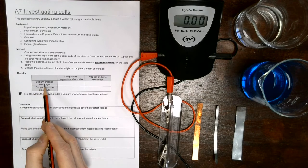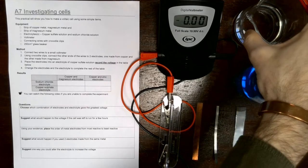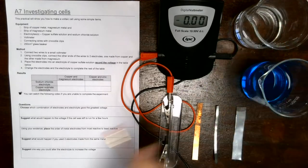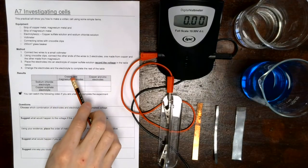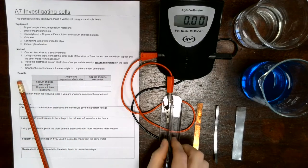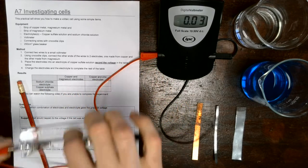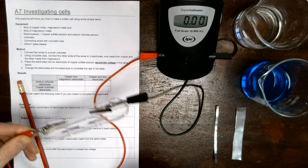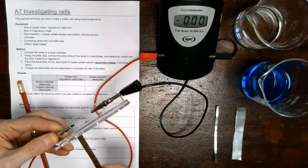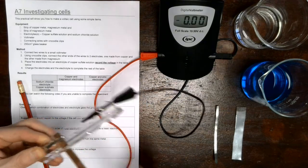The first electrolyte is going to be sodium chloride, so that's this beaker over here with the colorless solution, and we're going to be using copper and magnesium for our electrodes. So let's just get this set up. We're going to take the copper strip and place it into the crocodile clip. I'll hold it in place.